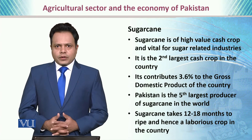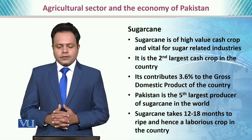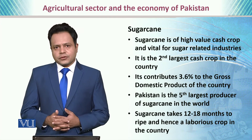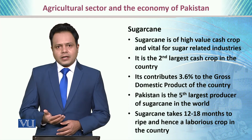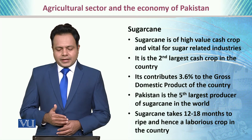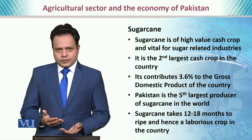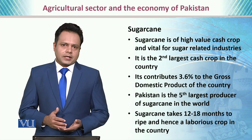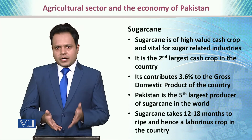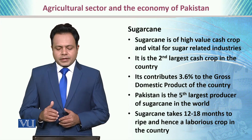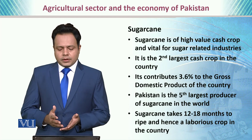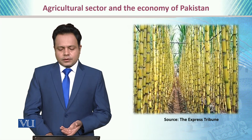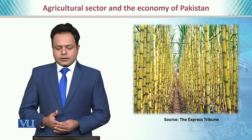Then we have sugarcane. Sugarcane is a high-value cash crop and it is vital for sugar-related industries. It is the second largest cash crop in Pakistan and it contributes 3.6% to the GDP. Pakistan is the fifth largest producer of sugarcane in the world. Sugarcane takes about 12 to 18 months to ripen and hence it is a laborious crop that takes a lot of time and effort to be produced. Here is a glimpse of the sugarcane crop.